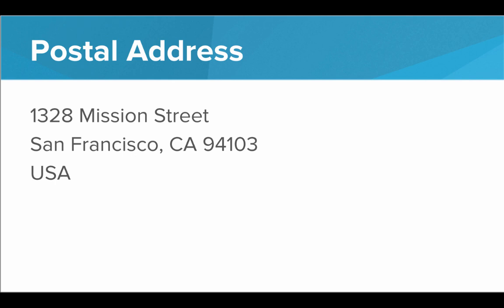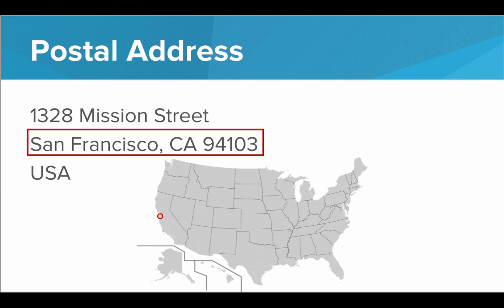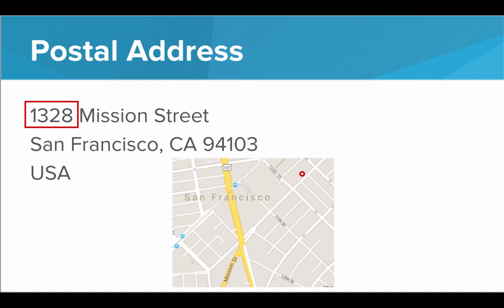Let's look at a postal address. Different parts of this postal address narrow in more and more specifically where the location is. First off, we see that it's in the USA, so this address must be somewhere within this part of the world — we've narrowed it down to at least one country. We can go one line up and see that it's at this zip code inside San Francisco, California. So now we see a zip code within San Francisco. Next, we can look at the street — it's on Mission Street, somewhere along this particular road within that zip code. And lastly, to nail down the actual location along that street, we look at the street address, and we see that that's actually the location we're looking for.